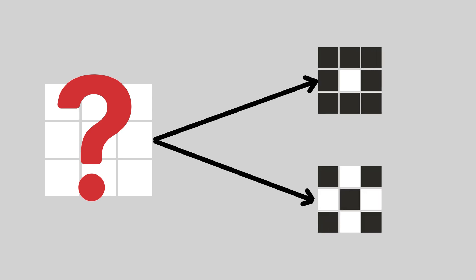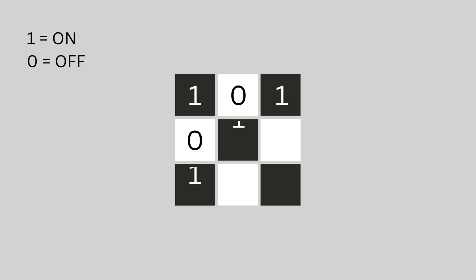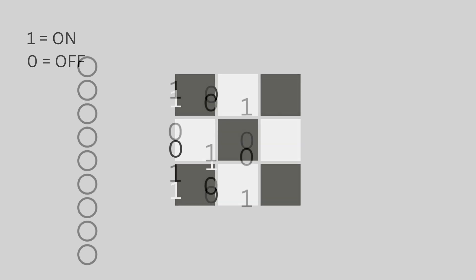Imagine you're passing a cross into the network. Since our image is a 3x3 pixel grid, each pixel is either on or off. These nine numbers then form our nodes in the input layer.